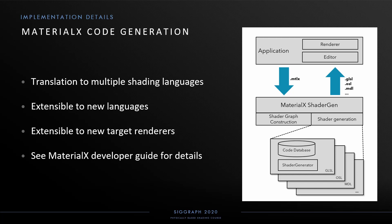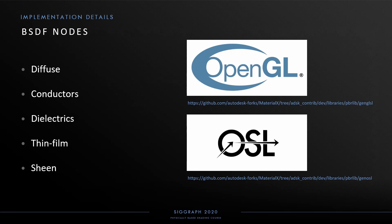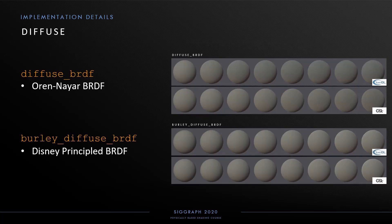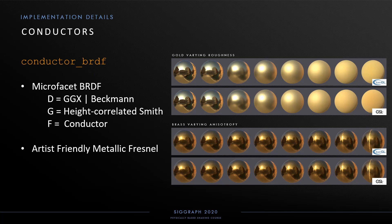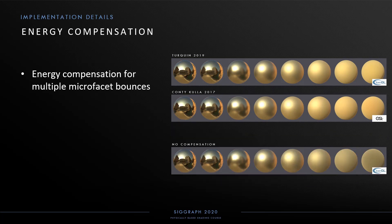The system is extendable to new shading languages or new targets for already supported languages, like different OpenGL viewports or different OSL renderers. Our standard diffuse reflection node is a standard implementation of Oren-Nayar, and the Burley diffuse reflection node closely follows the Disney paper from 2012. Our conductor BSDF is based on a standard microfacet model using physical conductor Fresnel with a complex refractive index, with the artistic re-parameterization from Gulbrandsen. To compensate for energy missing from multiple scattering on rough surfaces, we use the method from Turkin.